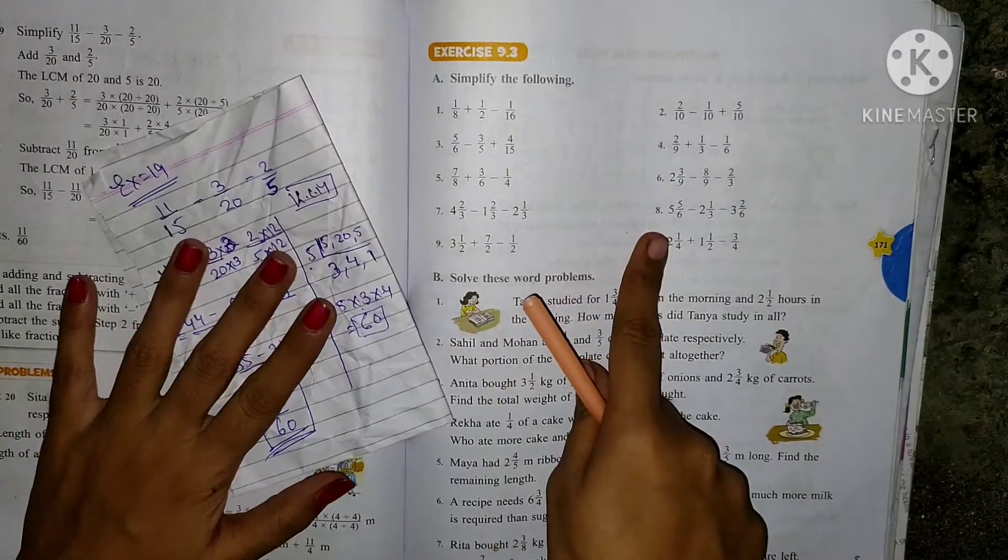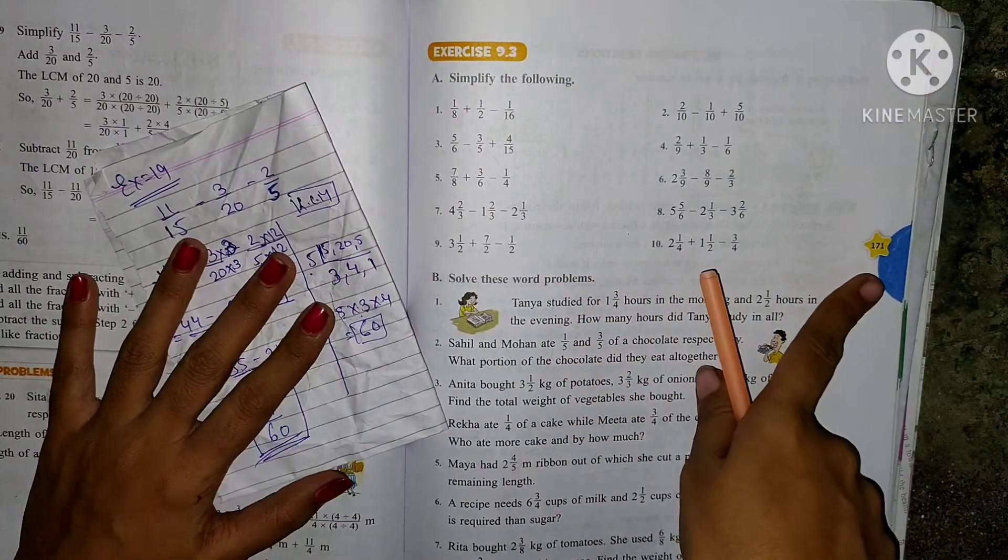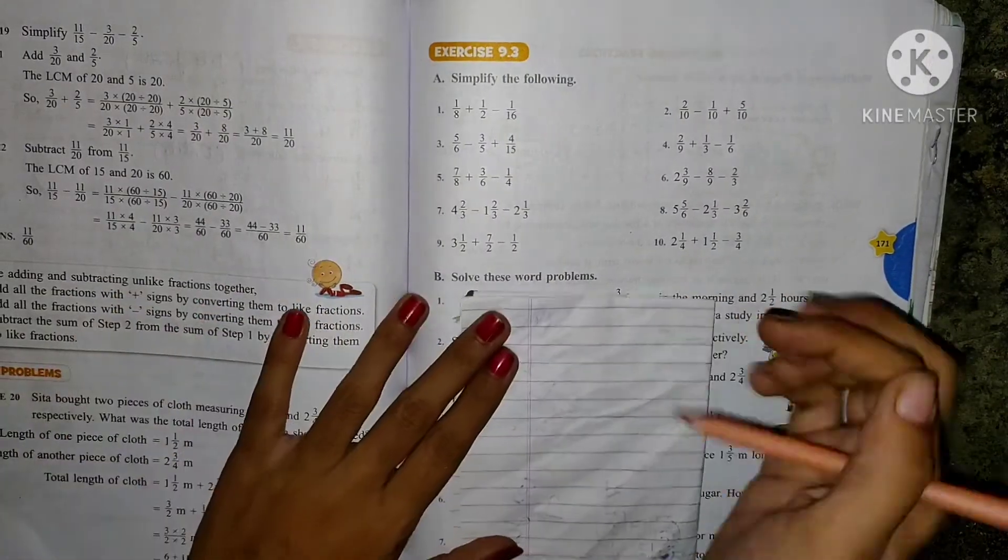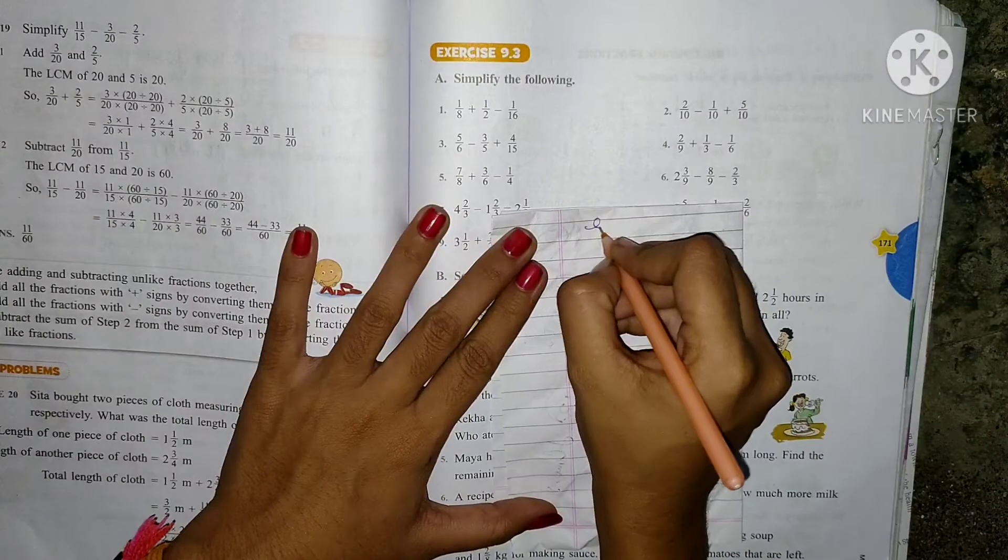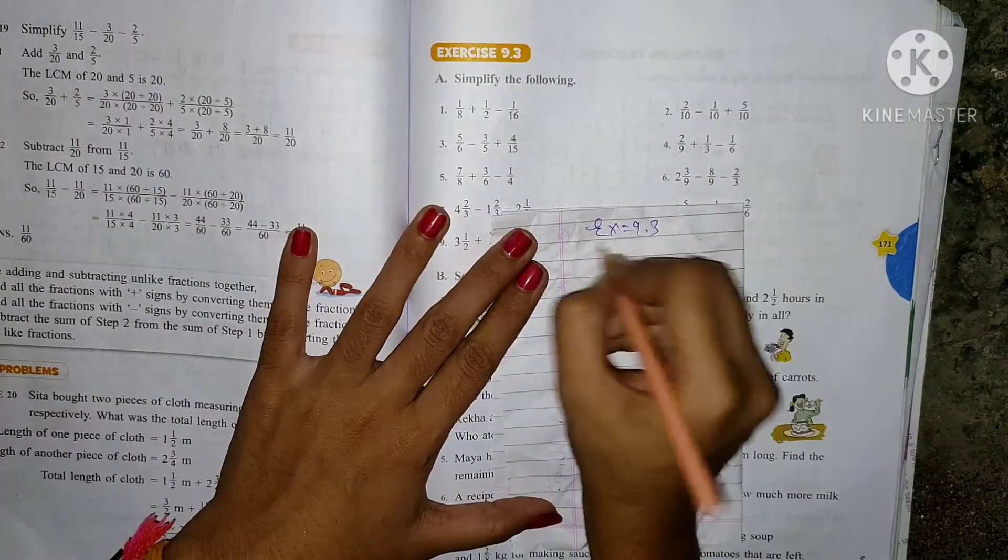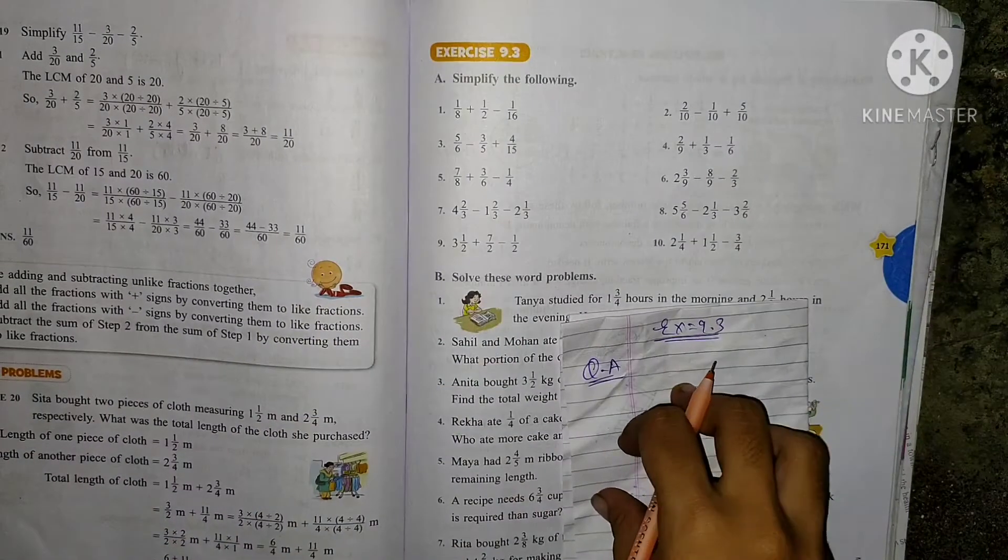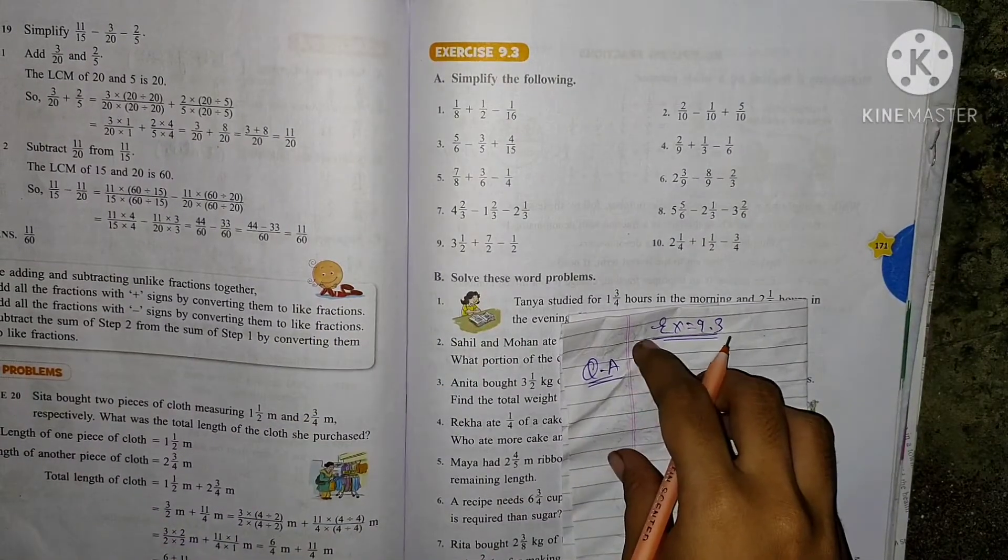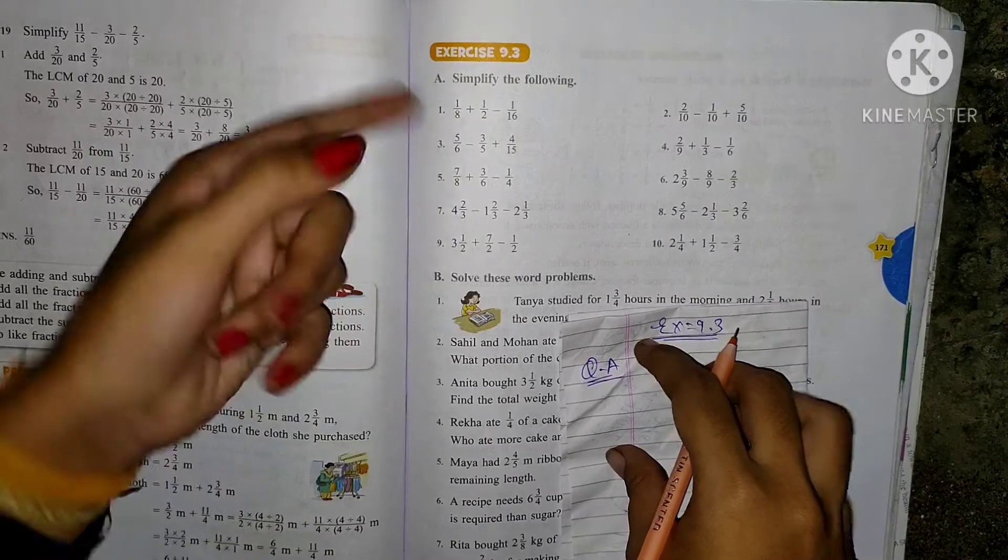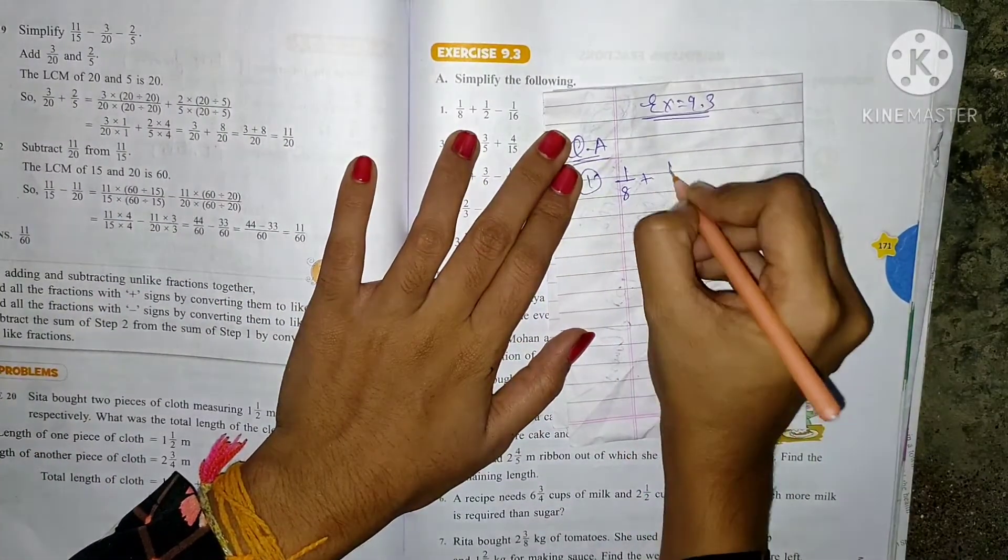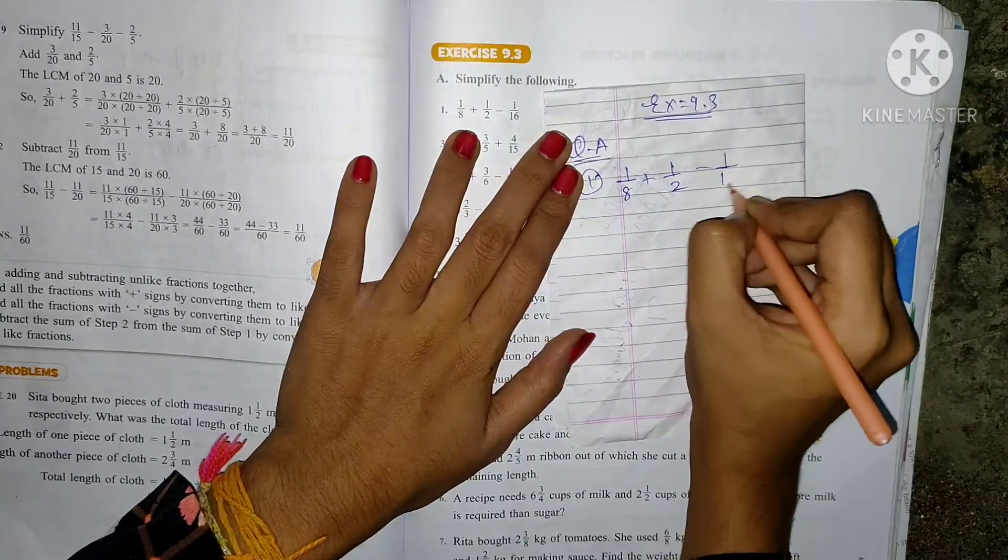Now students, let's see the Exercise 9.3. This is in your next page, that is your page number 171, okay? So Exercise 9.3, question A. Question A we will solve, students. Values are given, right? So come, let's start from the first. 1 by 8 plus 1 by 2 minus 1 by 16.